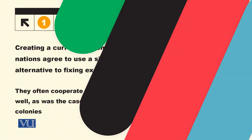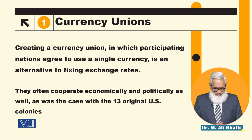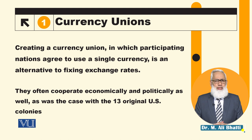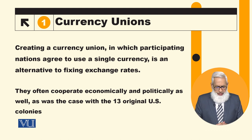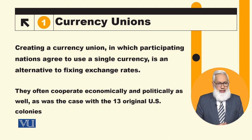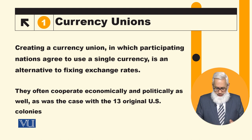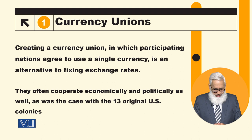In the last module we talked about fixed exchange rate and flexible exchange rate systems. Creating a currency union, in which participating nations agree to use a single currency, is an alternative to fixing exchange rates. Instead of one country fixing the exchange rate, a group of countries form a currency union. They often cooperate economically and politically as well.